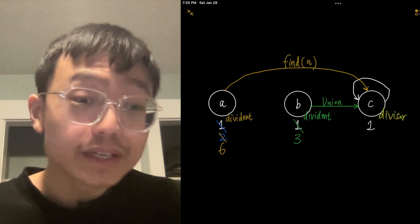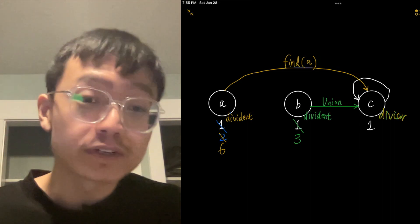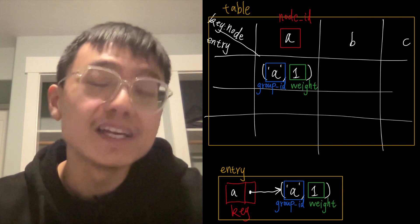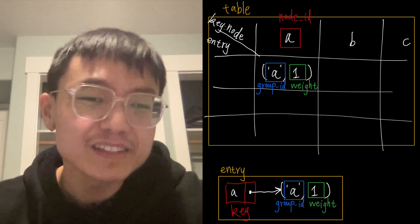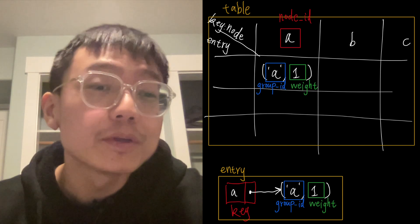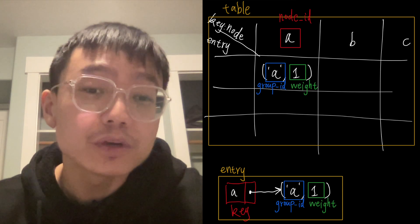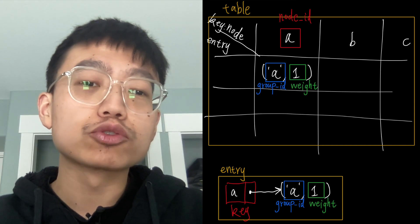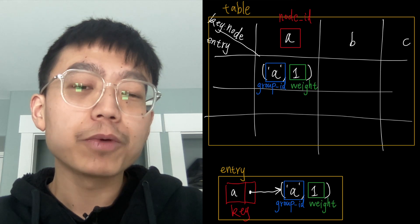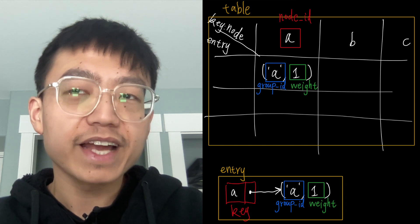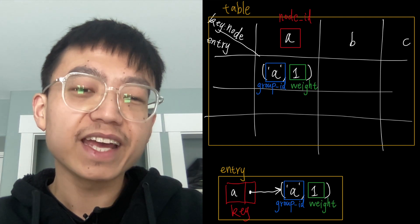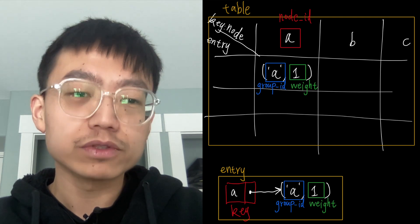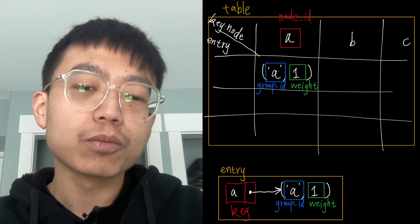Once the lazy evaluation of the find method is triggered, the state of the nodes along the chain is updated and they will eventually become consistent. The mechanism of the update is fairly similar to a depth-first search traversal. Initially, we build a table containing an entry for each node in the graph using union-find. The entry is defined as a key pointing to the group ID and weight. For example, when given node a, the entry would be a pointing to (a, 1), where the first a is the node ID, the second a is the group ID, and 1 is the weight.